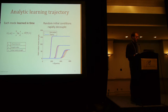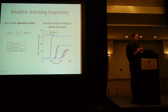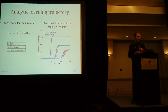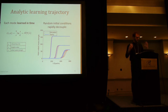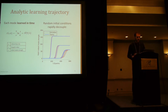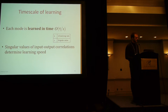I mentioned that these are from special initial conditions, but if you just run from random initial conditions, it turns out the solution is rapidly decoupled. The red lines here are from simulating a network with full random initial conditions, and you can see that the analytic solutions are still reasonably good approximations. So each mode is learned in time 1 over s, and the singular values are determining the learning speed.